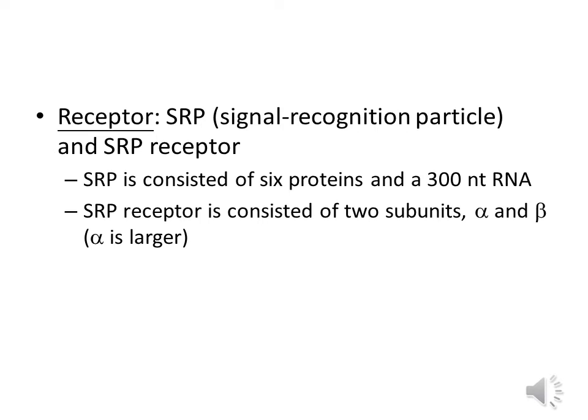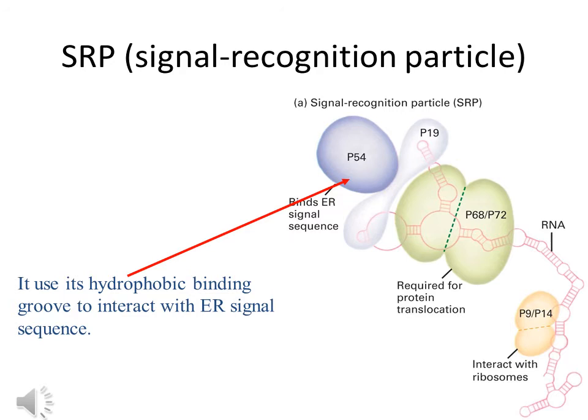The next factor needed is a receptor and its recognizing protein. The SRP, or signal recognition particle, as well as its receptor, the SRP receptor. The SRP is a complex consisting of six proteins and one 300-nucleotide RNA. The SRP receptor, to which SRP binds, consists of two subunits, alpha and beta, with the alpha subunit being the larger one.